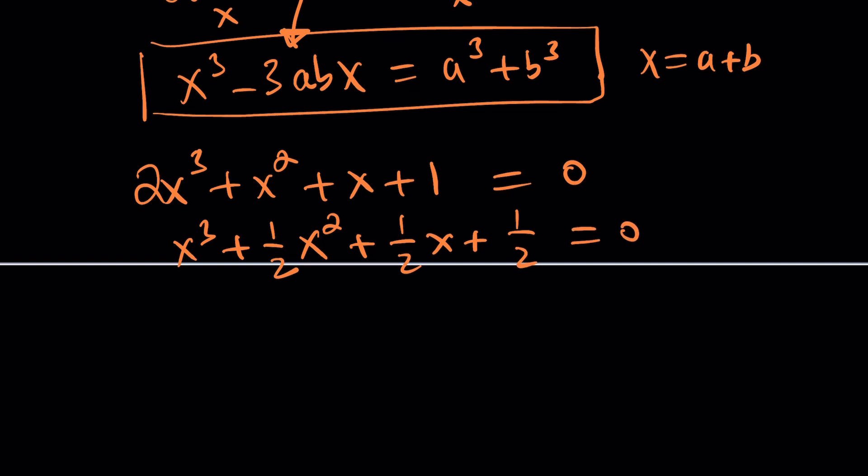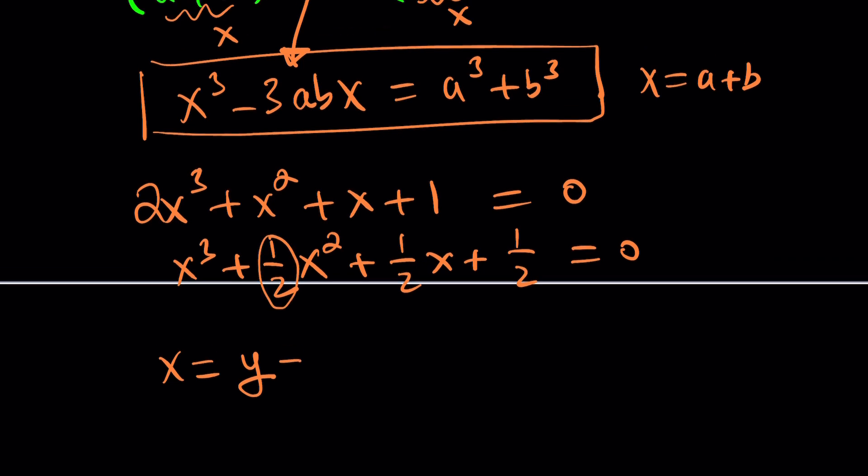And then I want to get rid of x squared, so I should replace x with something. And that will be determined by this. y minus the coefficient of x squared, which is 1 half, divided by the degree, which is 3. In this case, that will be 1 sixth.